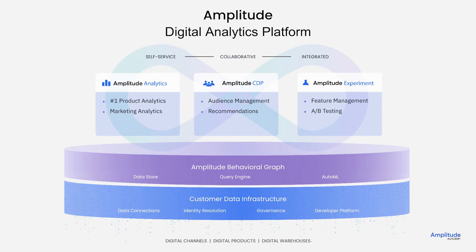From there, you can analyze and share your insights using a multitude of visualization and collaboration tools with Amplitude Analytics. Amplitude's Customer Data Platform, or CDP, features audience management and recommendations that allow you to build dynamic user lists, discover and activate new audience segments, and automate campaign targeting. And you can A/B test or see how new features perform with Experiment.